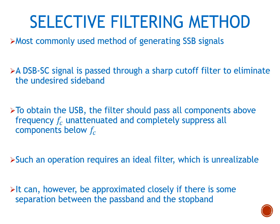Selective filtering is the most commonly used method for generating the SSB signal because it is the simplest technique. A commonly used double sideband suppressed carrier signal is passed through a sharp cutoff filter to eliminate the undesired sideband. Looking at the positive frequency side of a DSB-SC signal, the filter removes one of the sidebands and retains the other.